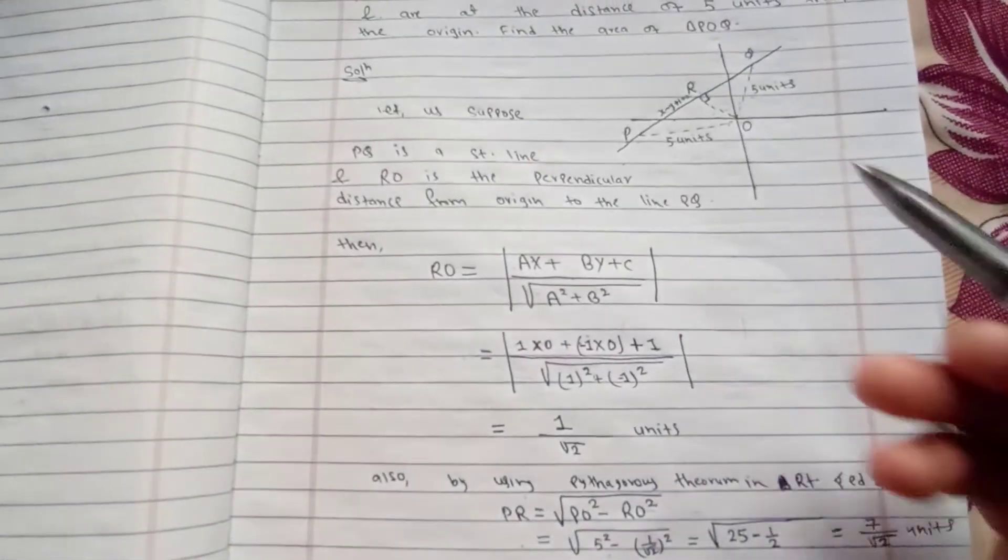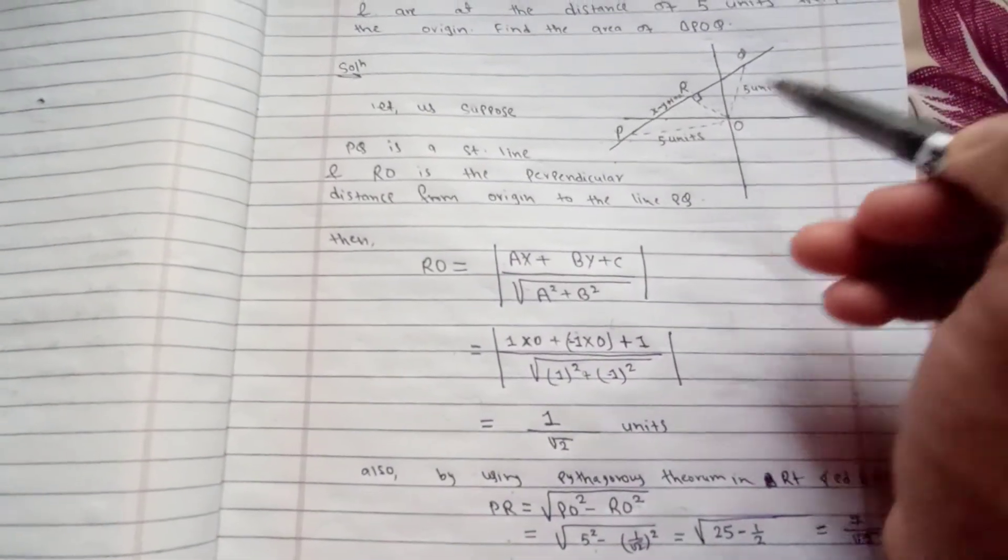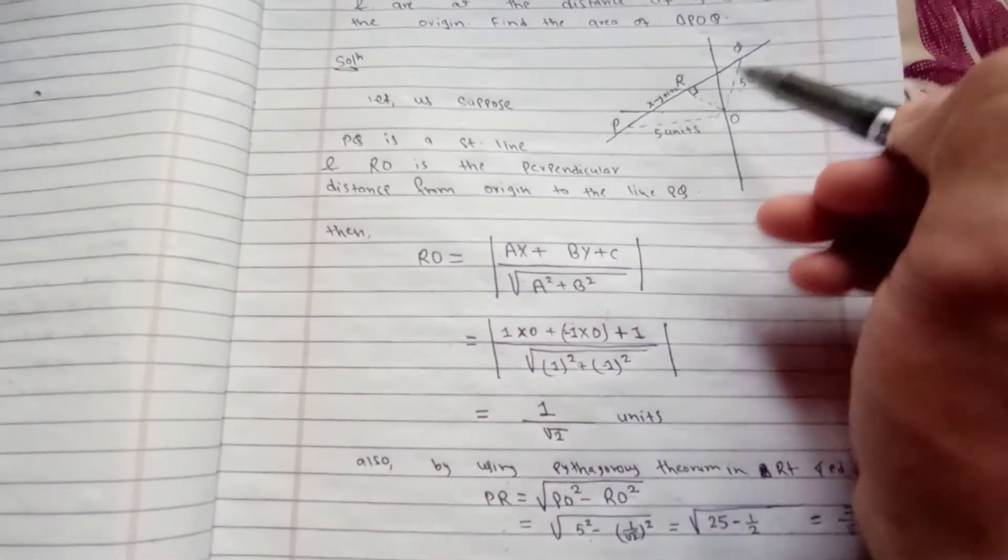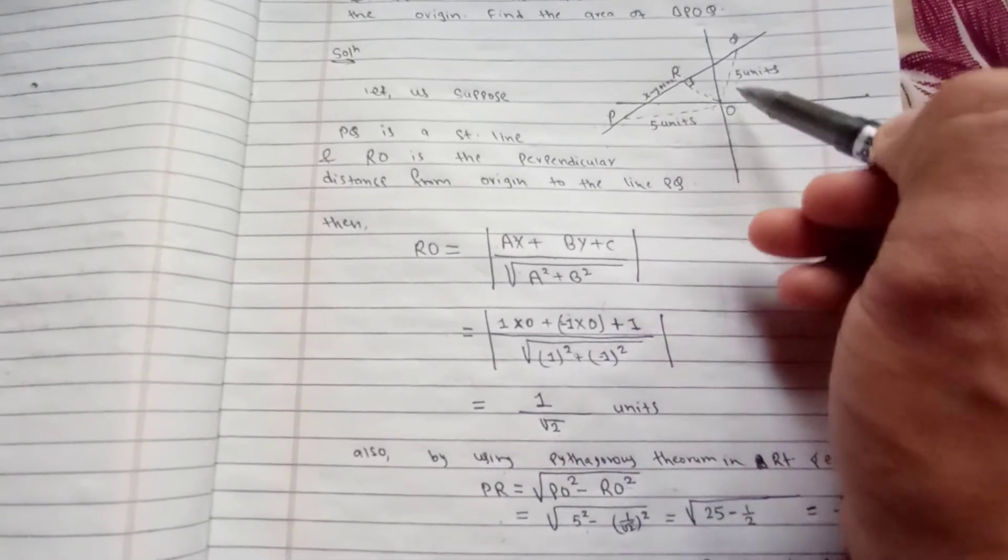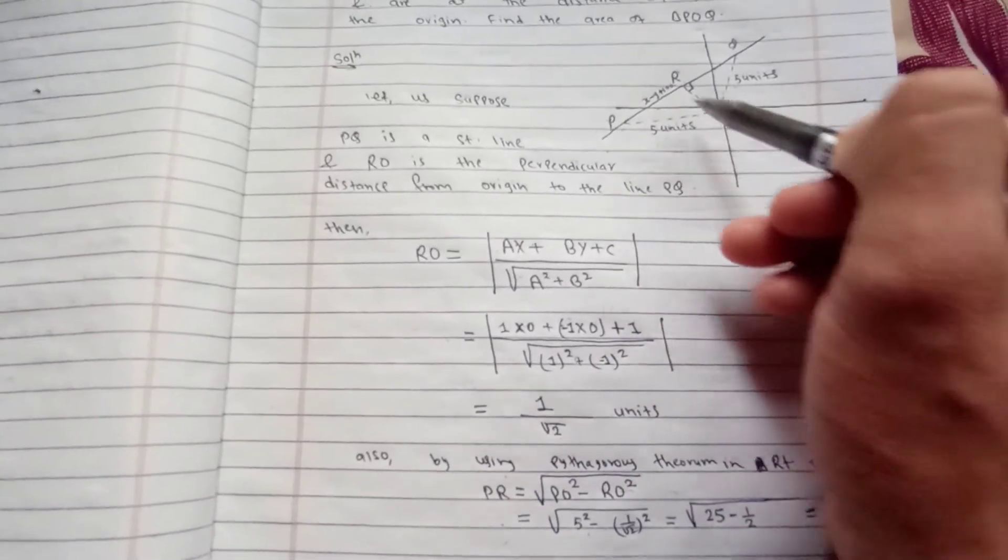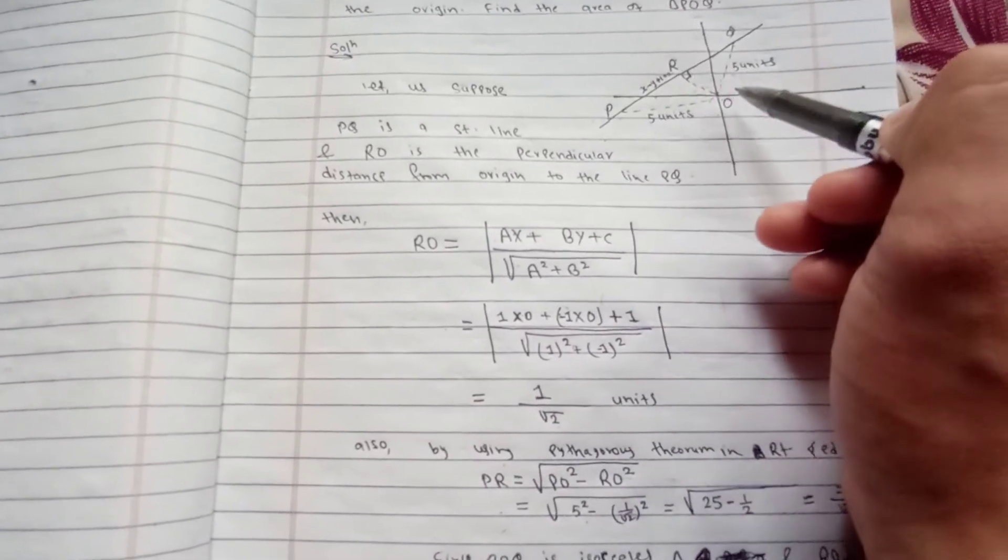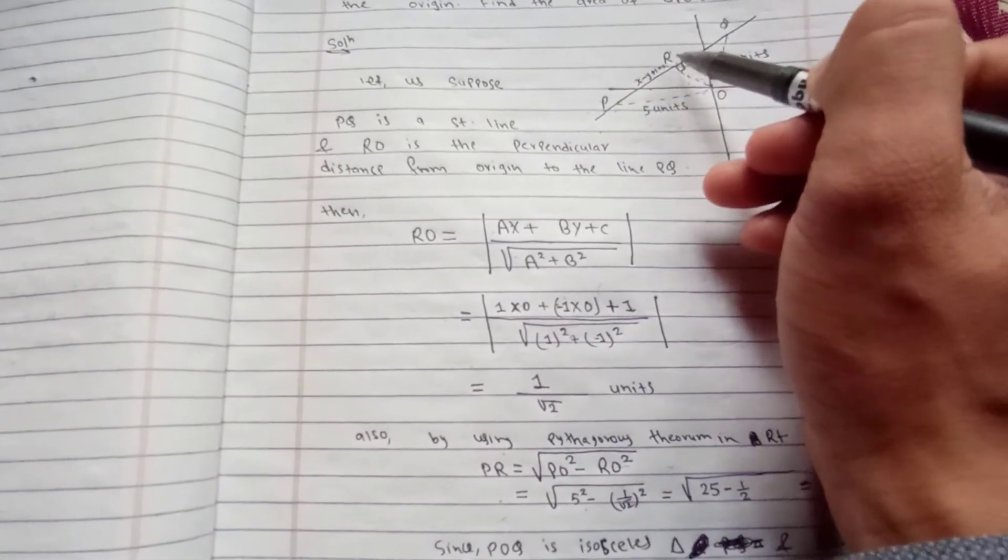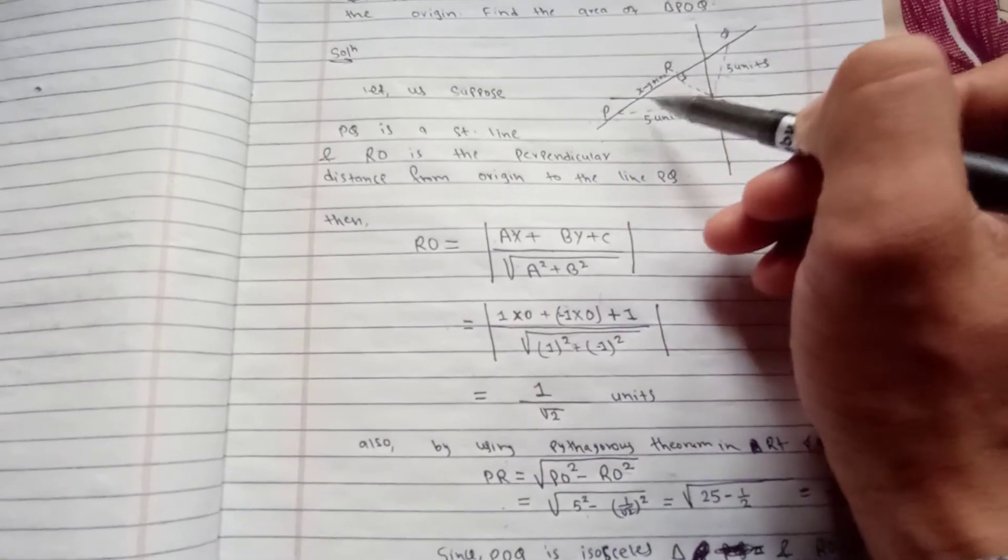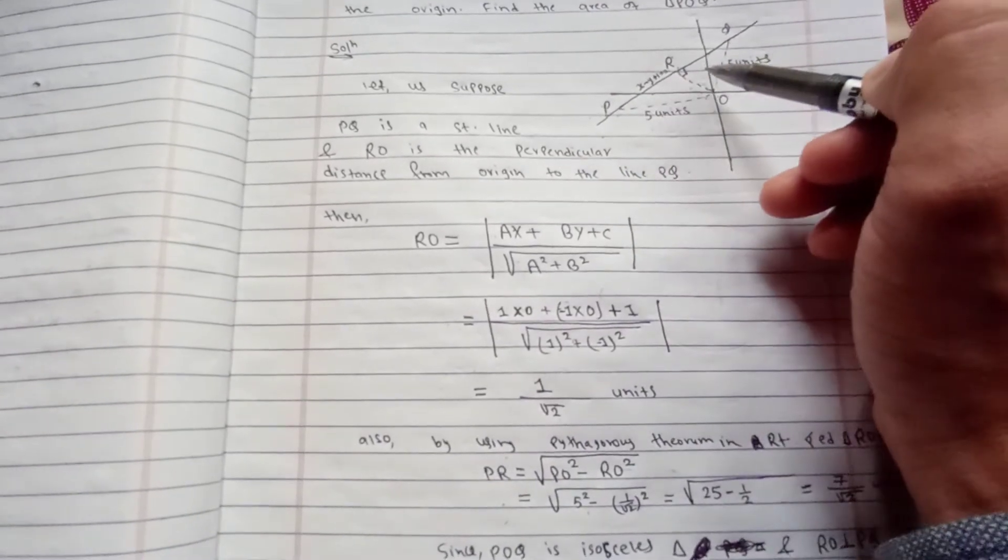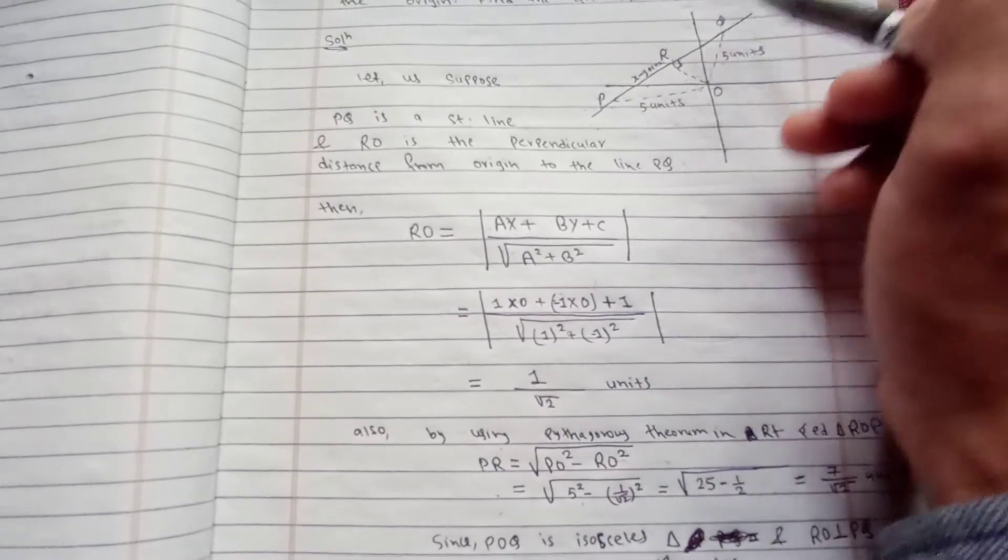According to the question, PO and OQ are equal, which means triangle POQ is isosceles. In an isosceles triangle, a perpendicular distance from the vertex to the base always bisects the base. Hence PR always equals RQ.